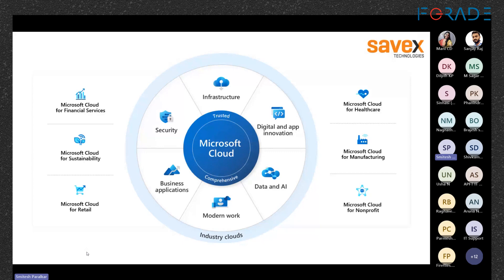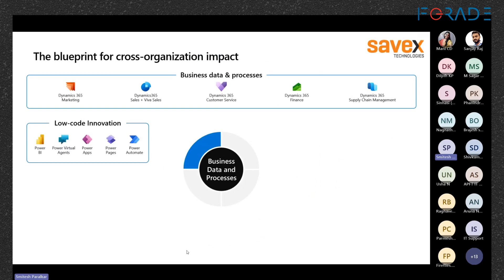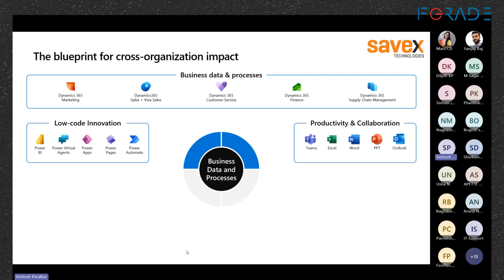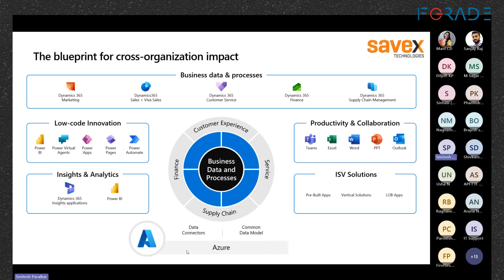Microsoft Cloud has a solution for each vertical — financial services, healthcare, manufacturing, nonprofit, retail, and sustainability. For business and data processes, it has Dynamics as a SKU. For local innovation, it has Power Apps. For productivity and collaboration, there are Teams, Excel, Word, PowerPoint, and Outlook. For ISV solutions there are vertical apps, for insights there is Power BI, and for data there is Azure.